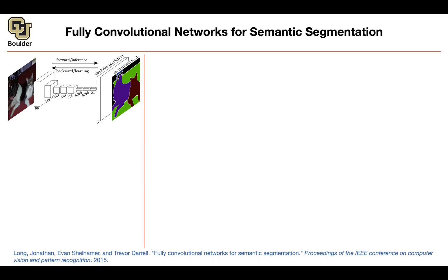The other problem is how to design the neural network. Previously we only needed to worry about the 'what' of an image — global information. Now we also need to worry about local information. The neural network should be able to resolve not only what but also where in the image is the cat, where is the dog. So this is a harder task for two reasons: fewer data, and you're interested in the 'where' of the object.